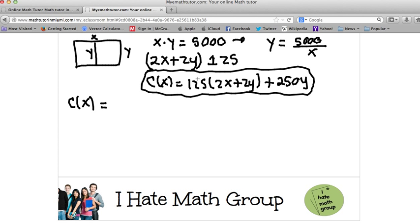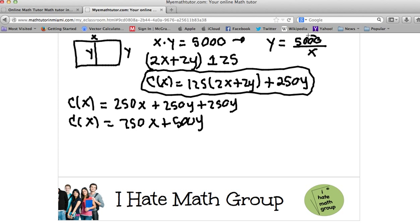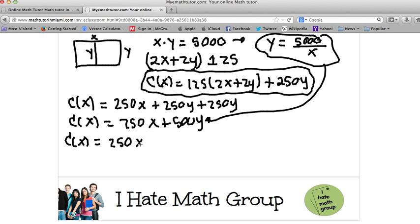Now remember that Y is also equals to 5,000 divided by X. I just divided everything by X and I can go ahead and build my function of cost. And I have 125 times 2X, which is 250X plus 125 times 2Y plus 250Y. Now let's clean this up and I have 250X plus 500Y. Let's go ahead and substitute this Y right here. So I have C(X) equals 250X plus 500 and then I'm going to put here my 5,000 over X.